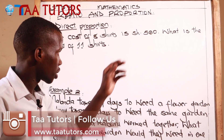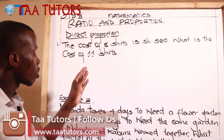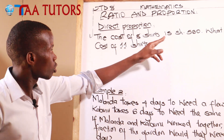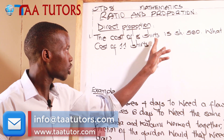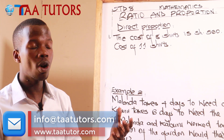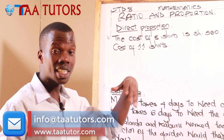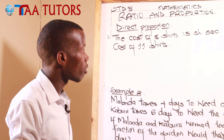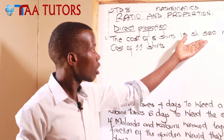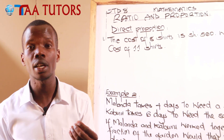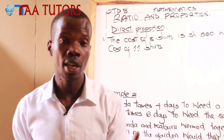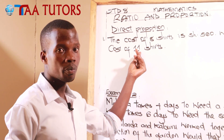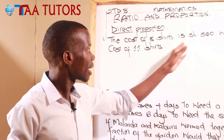Eight shots cost 560 Kenya shillings. What is the cost of 11 shots? We have been told that eight shots cost this amount, and now we need to find the cost of 11 shots. There are two ways of getting the answer: you can get the cost of one shot first, or you can work it directly.